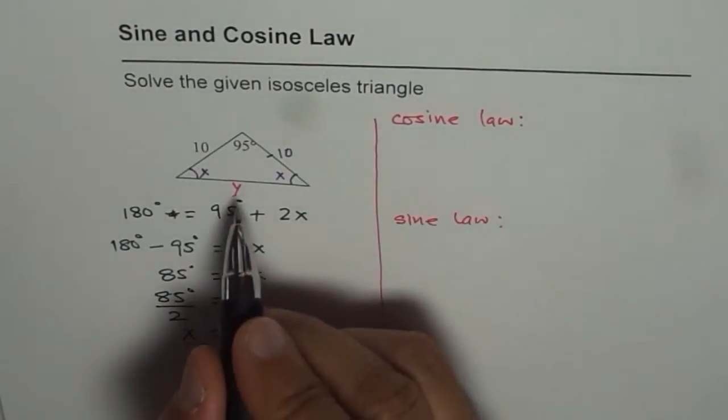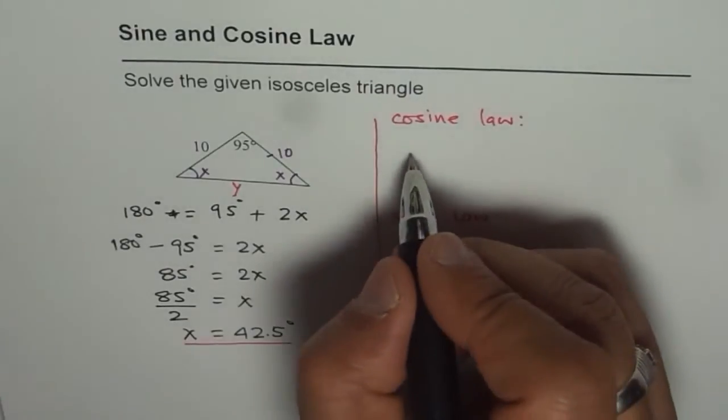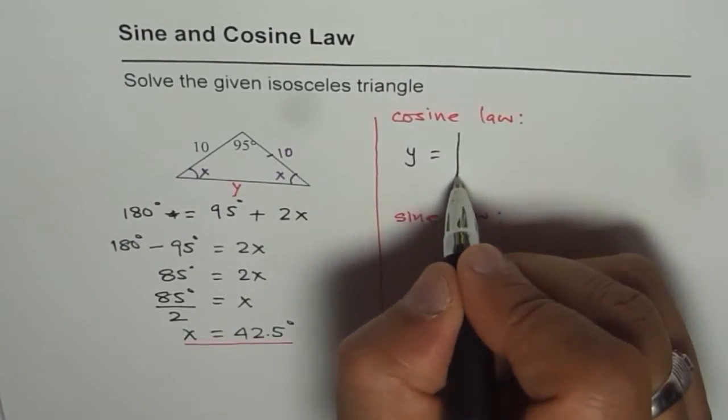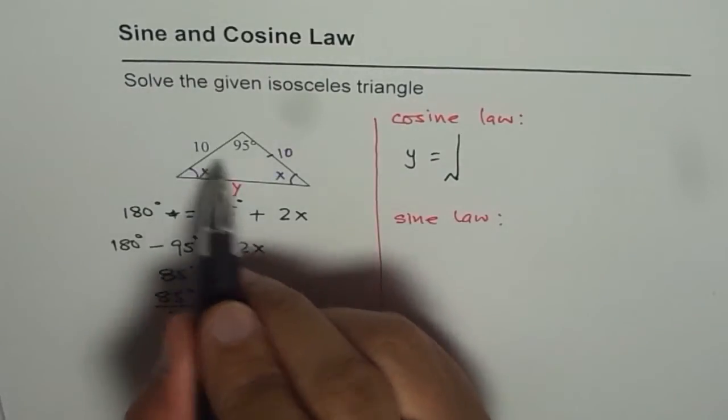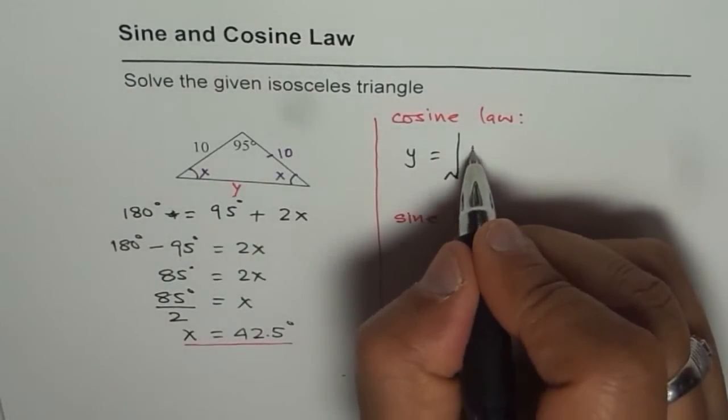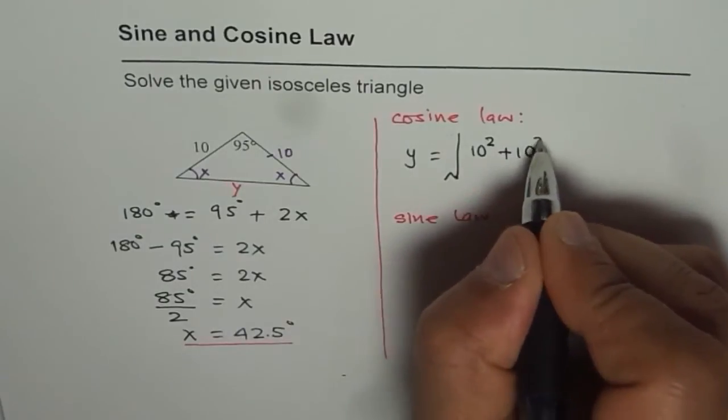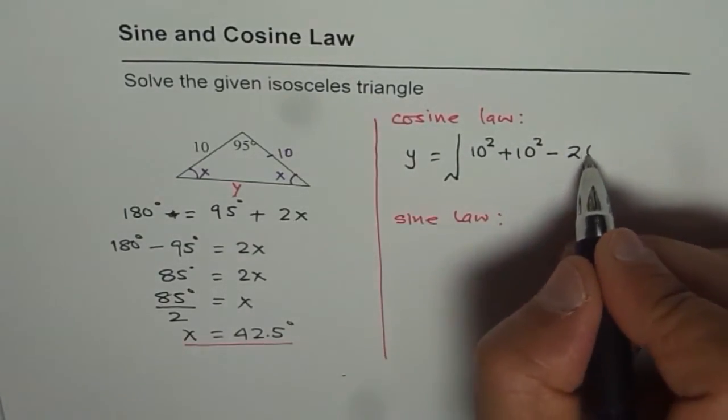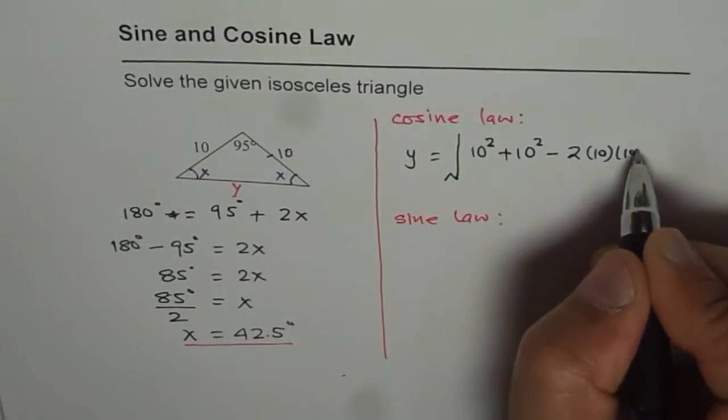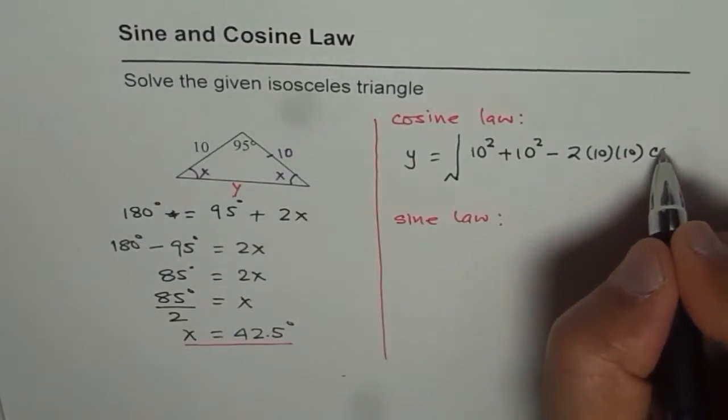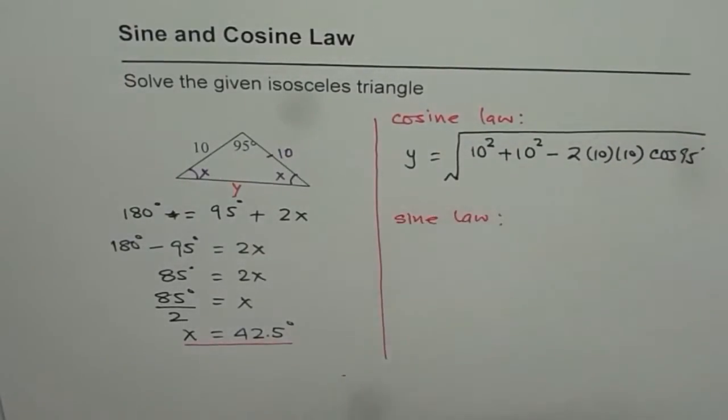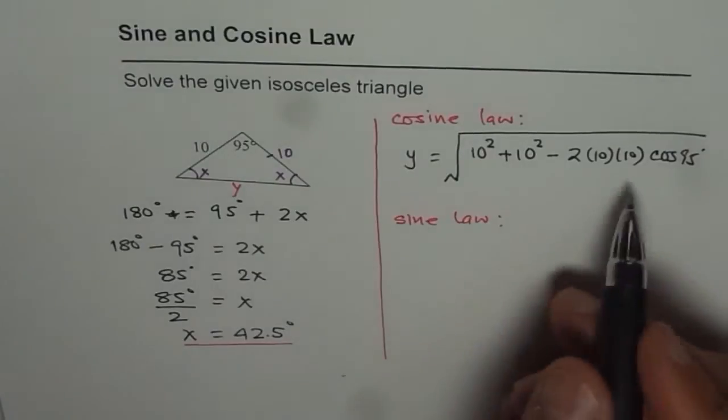If you use cosine law, then what is this y equals to? So you know y squared. So I will do square root this time. It equals 10 squared plus 10 squared minus 2 times 10 times 10 times cos of angle square root. So that gives us y. You can use calculator to find the answer.